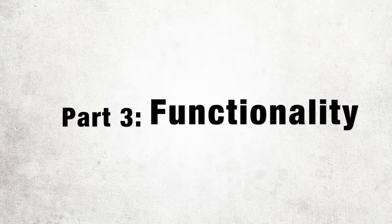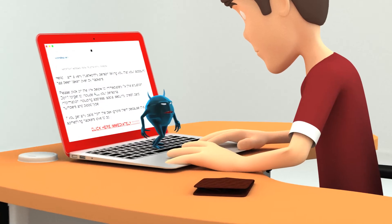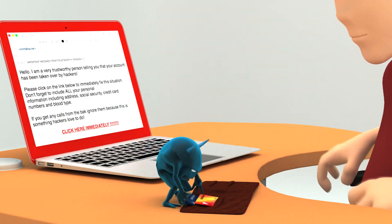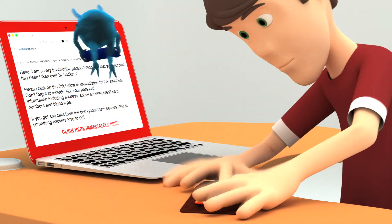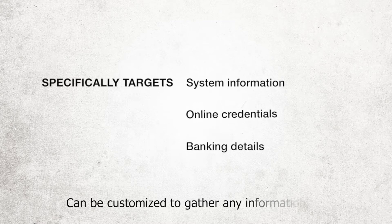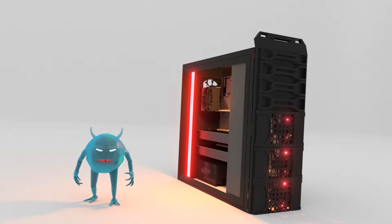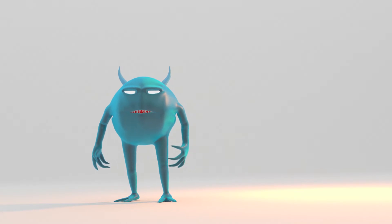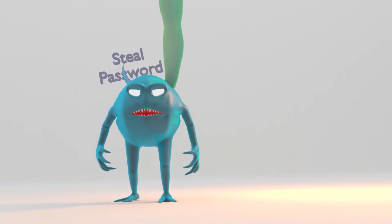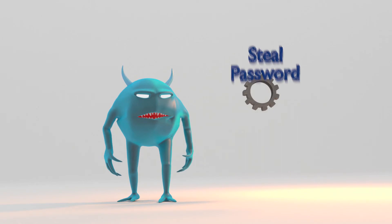This Trojan has primarily been designed to steal confidential information from the computers it compromises. It specifically targets system information, online credentials, and banking details, but can be customized to gather any sort of information. This is done by tailoring configuration files compiled into the Trojan installer by the attacker, which can later be updated to target other information if the attacker so wishes.